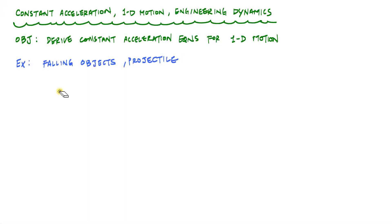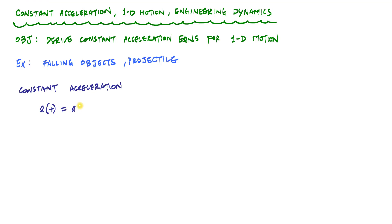Constant acceleration is a special case where the acceleration — whether with respect to time, position, or velocity — is just equal to a constant, a number. I'll call that AC.